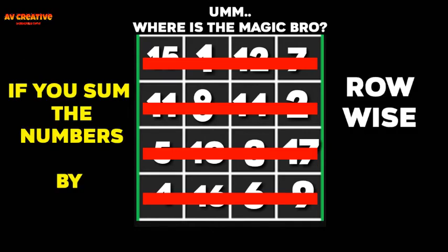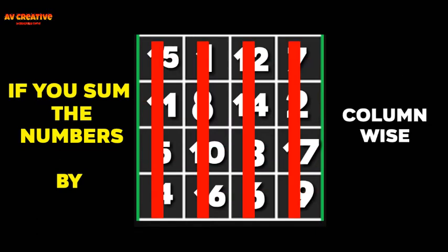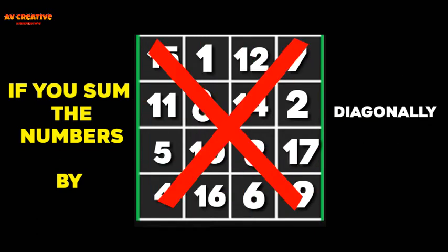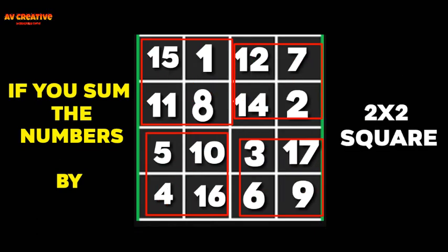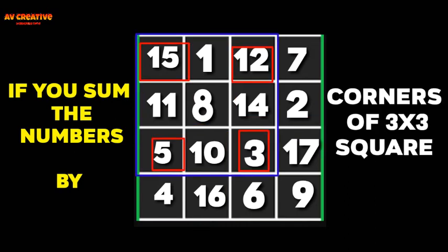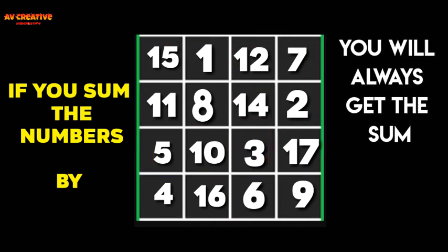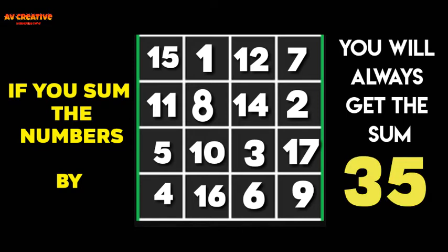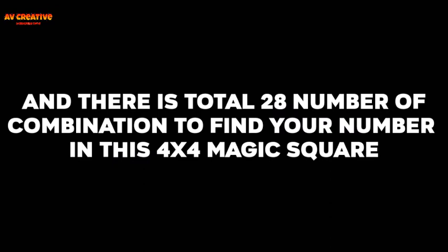sum the numbers by row, column, diagonally, 2 by 2 square, 3 corners of 3 by 3 square, you will always get sum 35. There are total 28 number combinations to find your number in this 4x4 magic square.